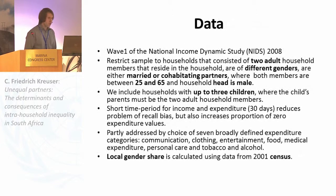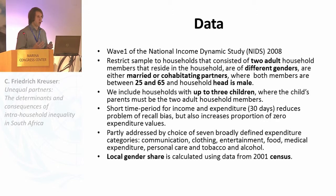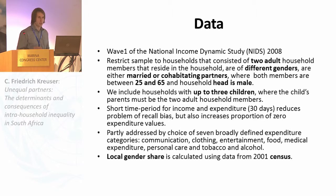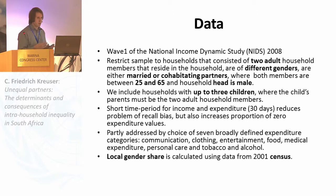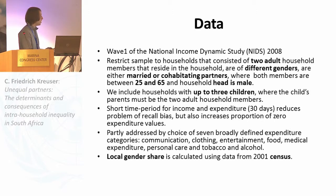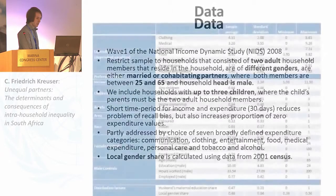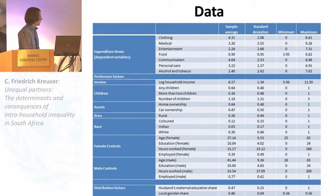For the data, we use wave one of the National Income Dynamics Study (NIDS) and restrict the sample to control for variation that cannot be captured by dummies alone. We restrict to two-adult households of different gender — either married or cohabiting partners between the ages of 25 and 65 where the household head is male — as this is what we mostly observe in the data. We include households with up to three children. We use seven broadly defined consumption categories: communication, clothing, entertainment, food, medical expenditure, personal care, and alcohol and tobacco. The local gender share is calculated from the 2001 census, merged by district council to the NIDS data.